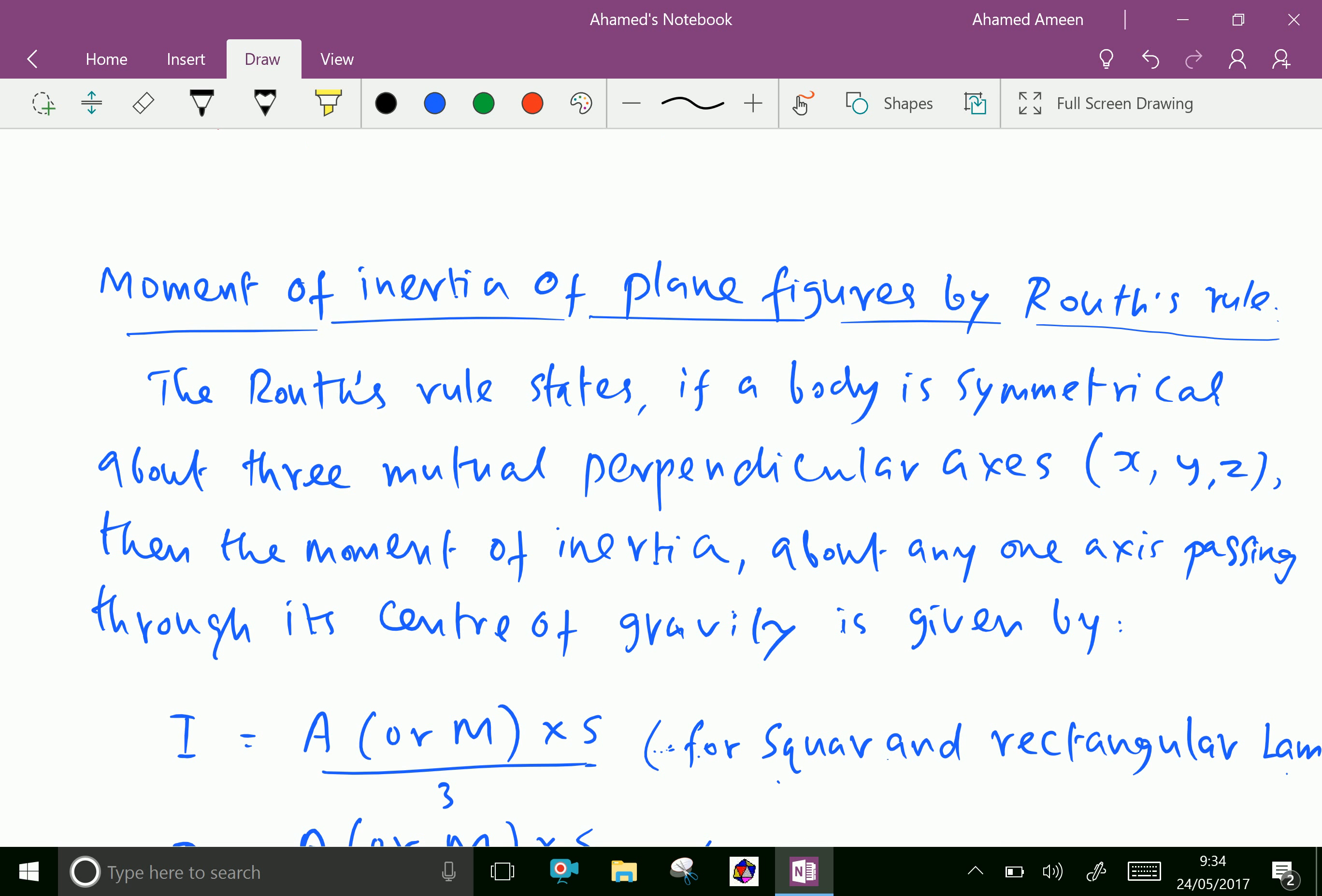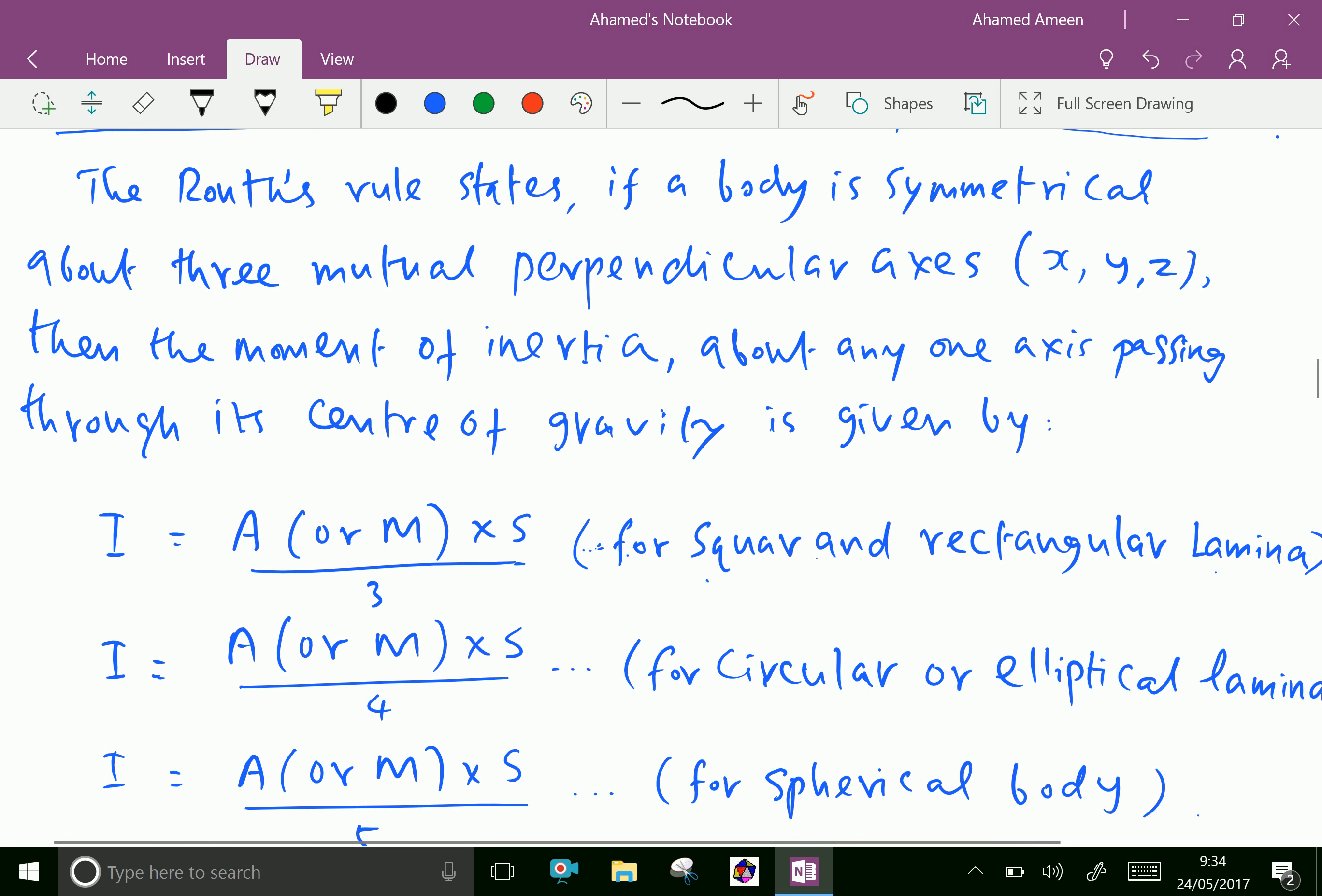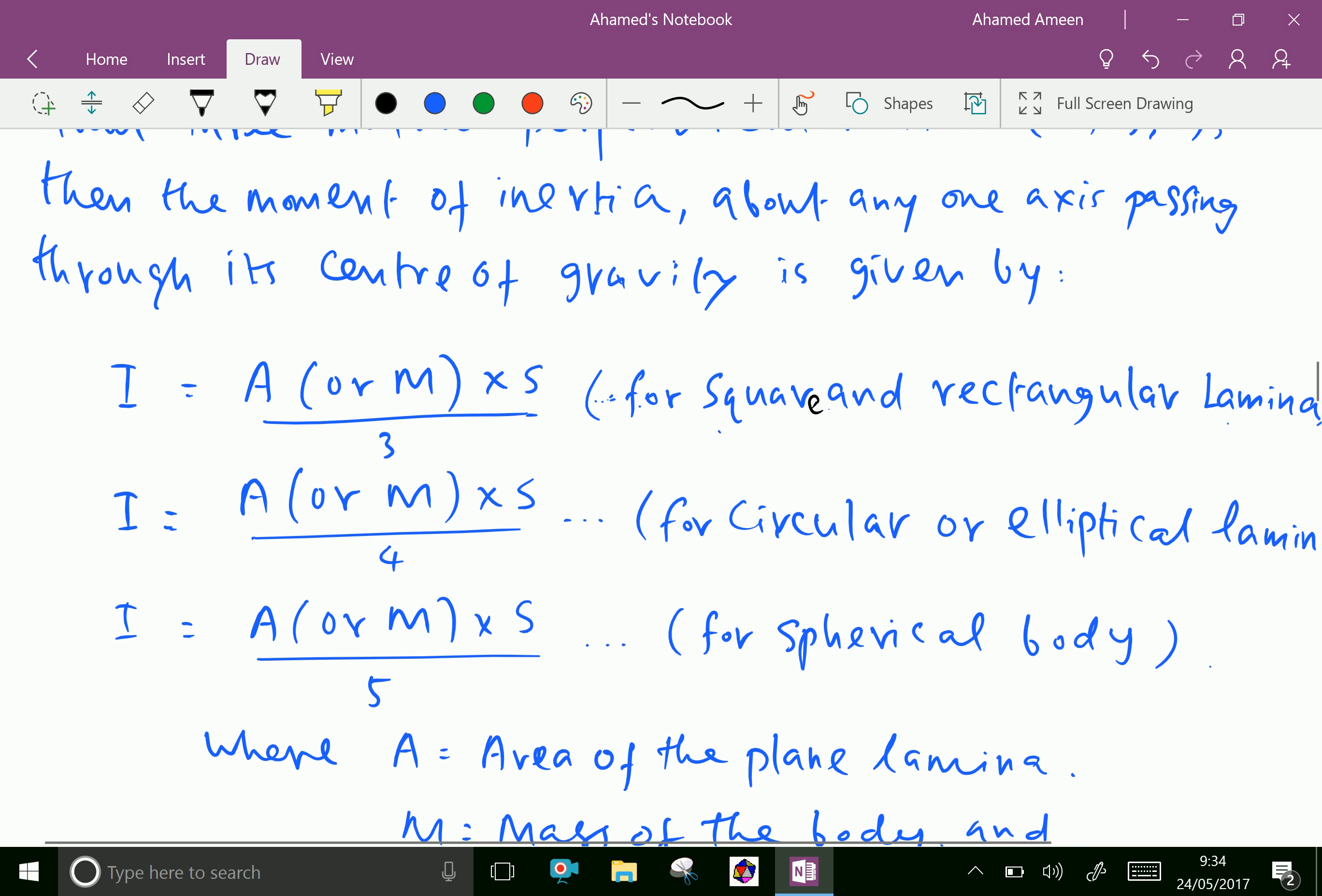The Ruth's rule states if a body is symmetrical about three mutually perpendicular axis that is x, y, z axis, then the Moment of Inertia about any one axis passing through its center of gravity is given by I equal A or M into S over 3 for square and rectangular lamina. Similarly, I equal A or M into S over 4 for circular or elliptical lamina.